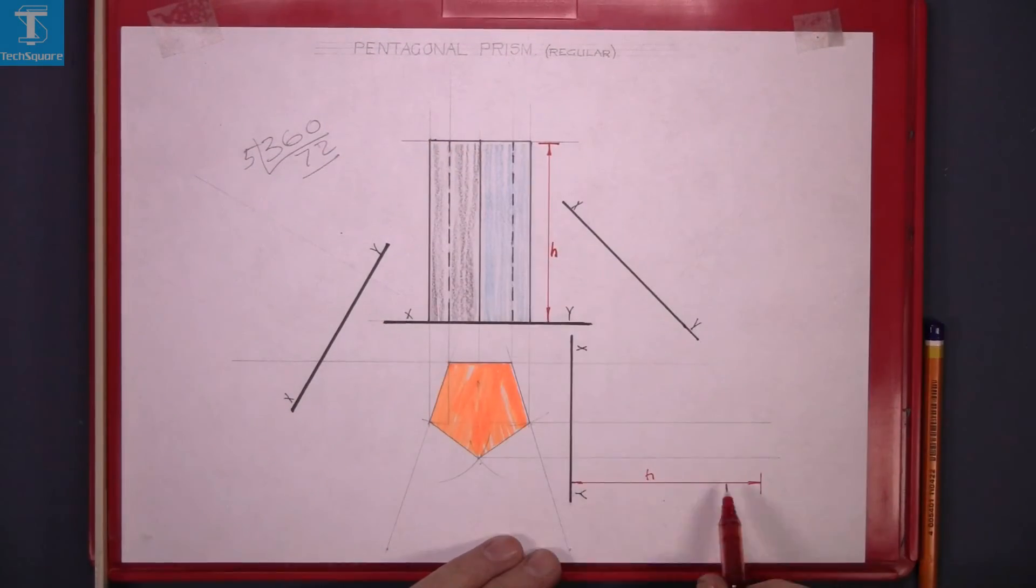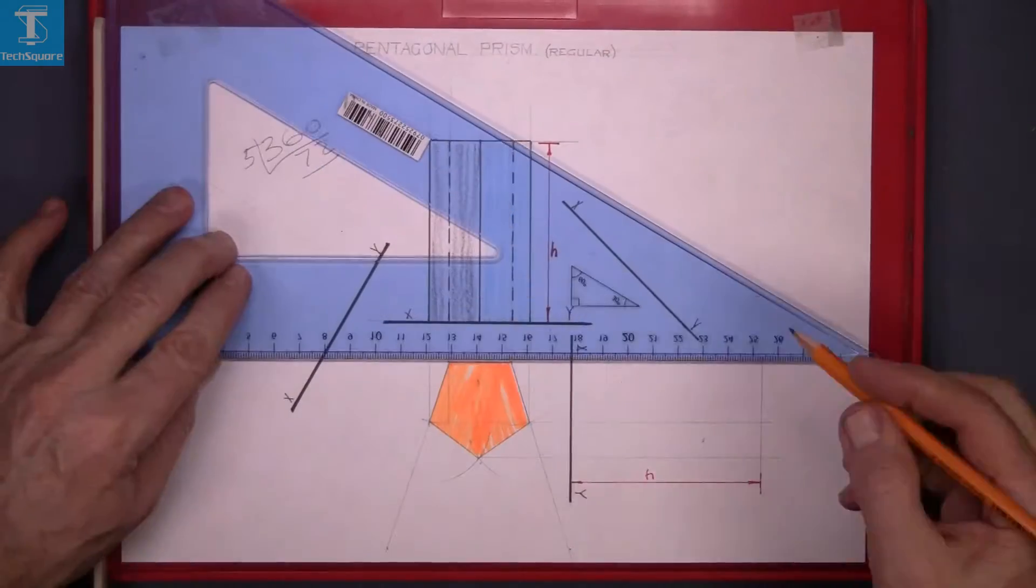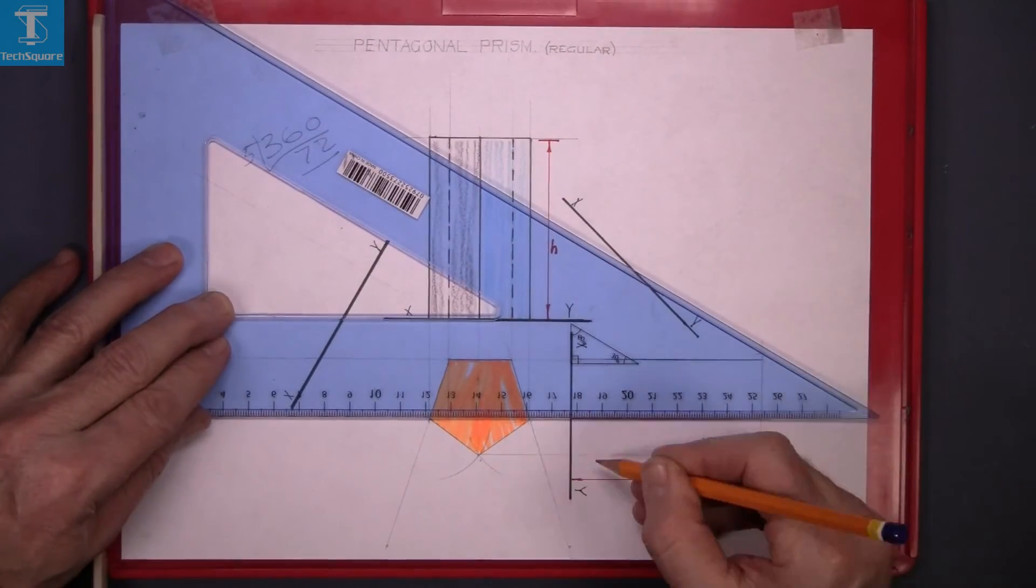The height H is as above. Mark it parallel with the XY line. And line in your drawing.